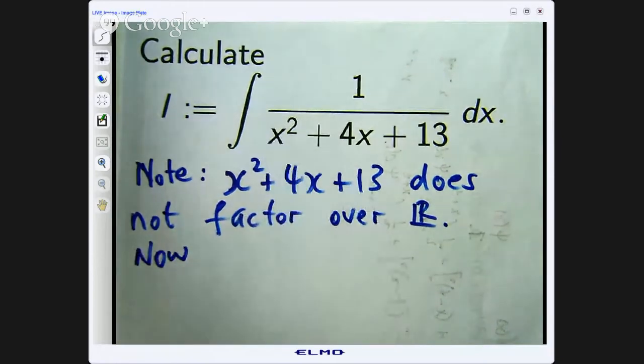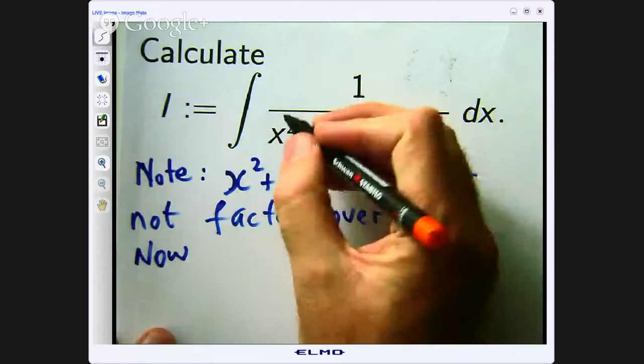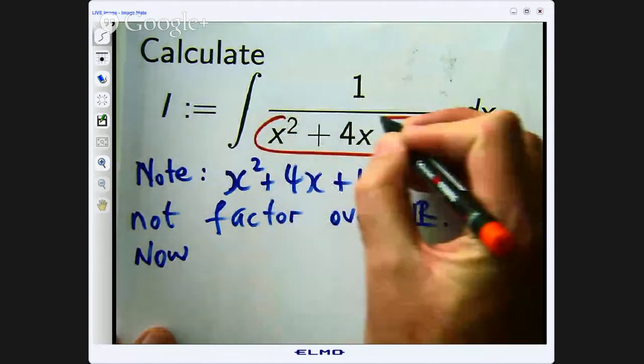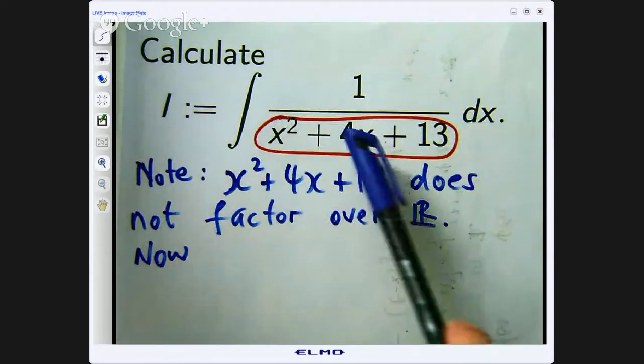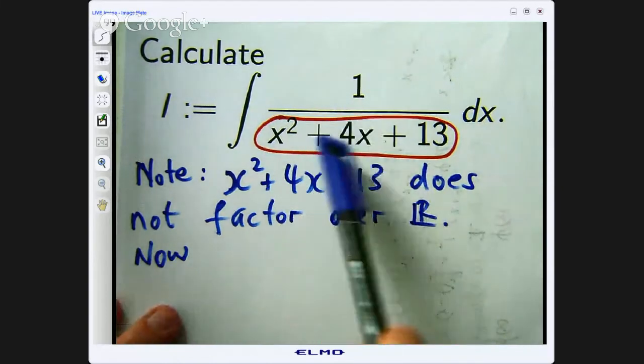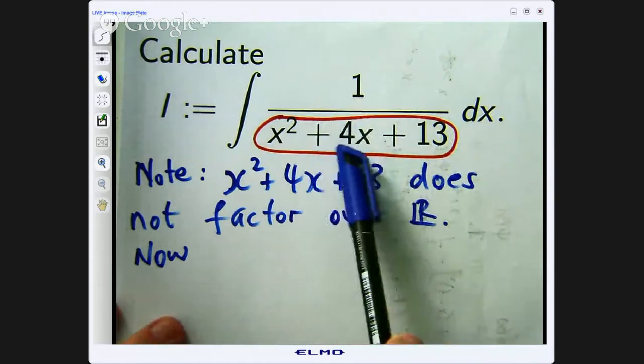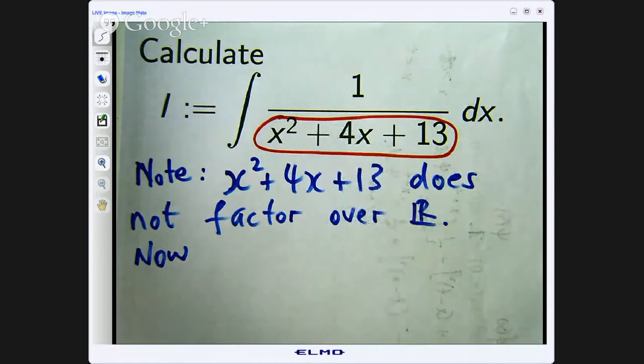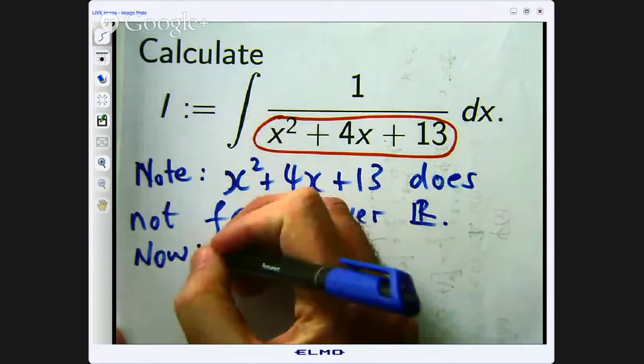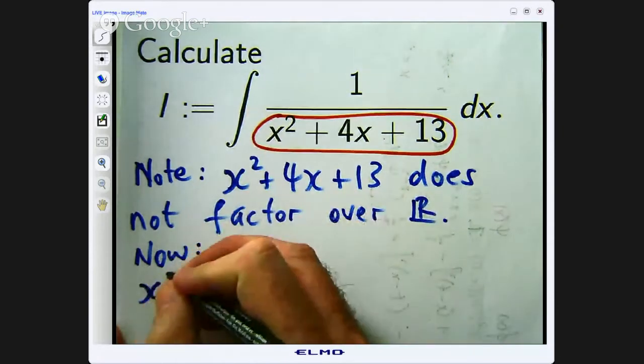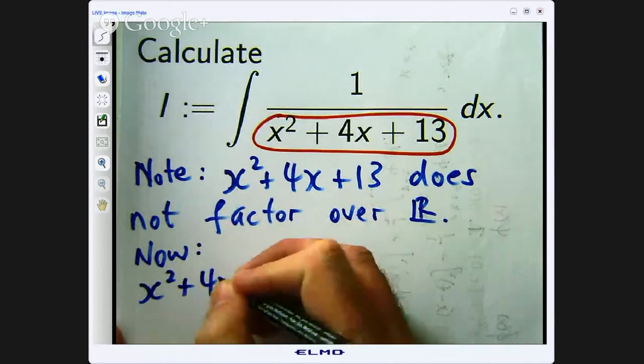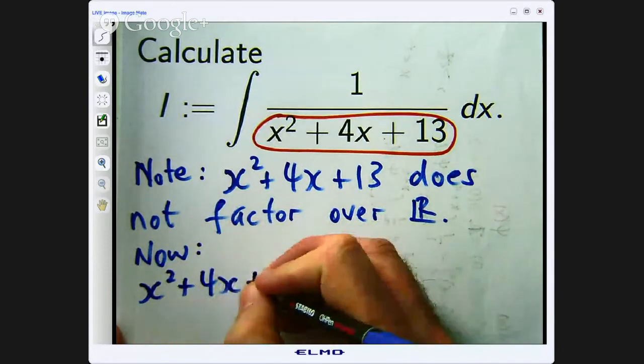Alright so when we are completing the square in the denominator, essentially it is writing the denominator as the sum of two squares. Now to do this you can do it a couple of ways but the fail safe way is to look at the coefficient of x. It is positive 4 here. You take half that coefficient, you square it, you add it and you take it away.